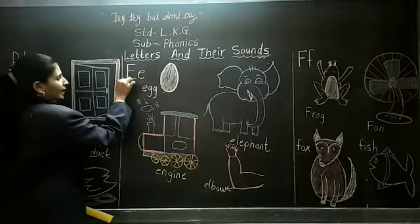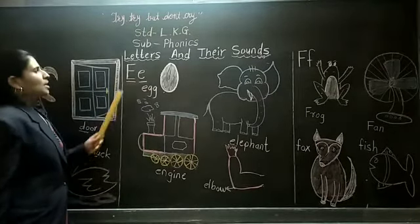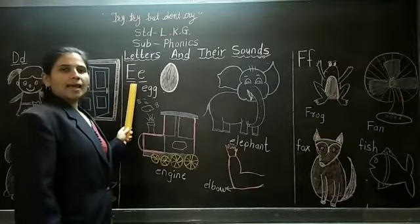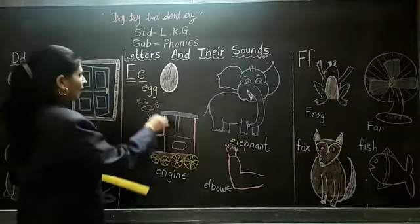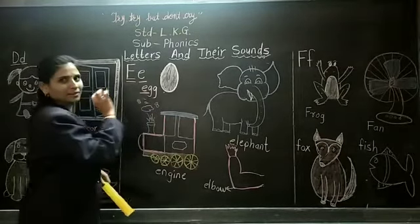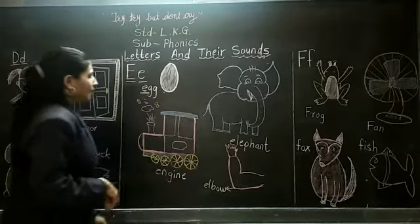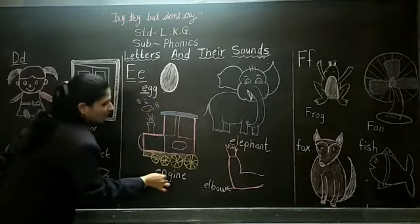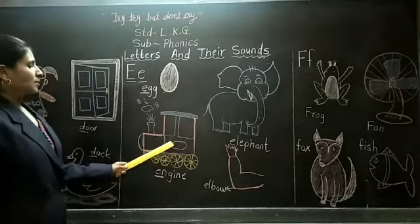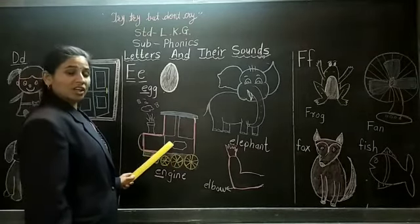Next letter, capital letter E, small letter E. The sound of E as eh, eh, eh. This is the picture of egg. Next, eh, eh, engine. See, this is the engine of train, train engine.